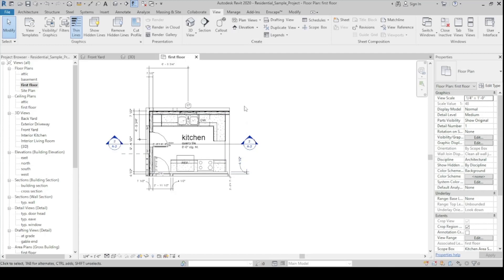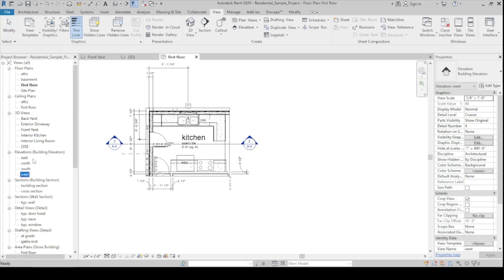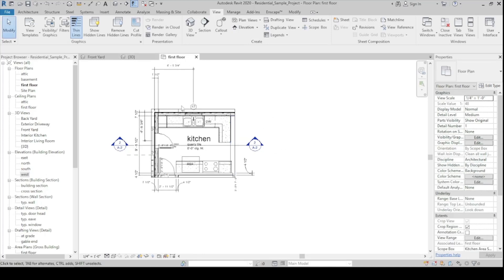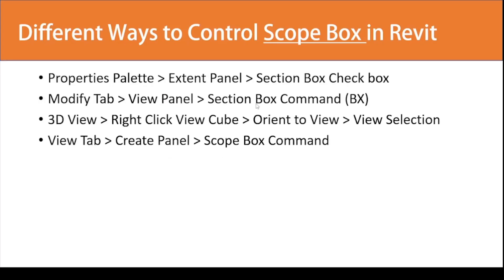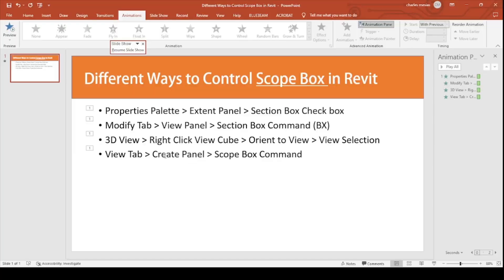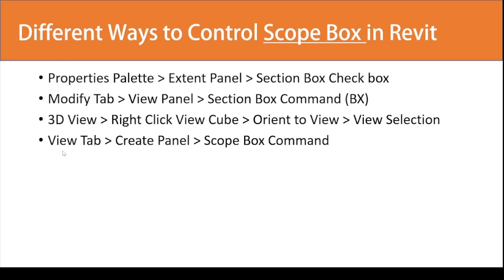That's how you perform method 4 — the same process applies to elevations, sections, and detail views, but not 3D views. Actually, let me correct that: the limitation of the first three methods is that they only work in 3D views, but this fourth method can also be used in 3D views. So the fourth method works in all types of views, unlike the first three which are only for 3D view.